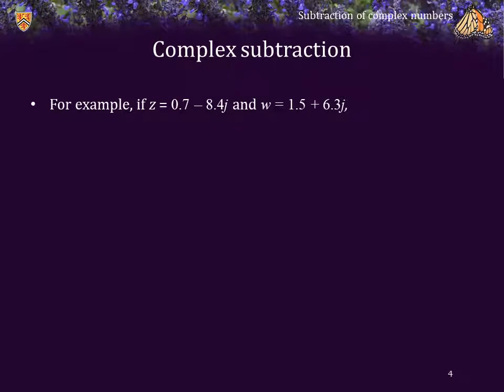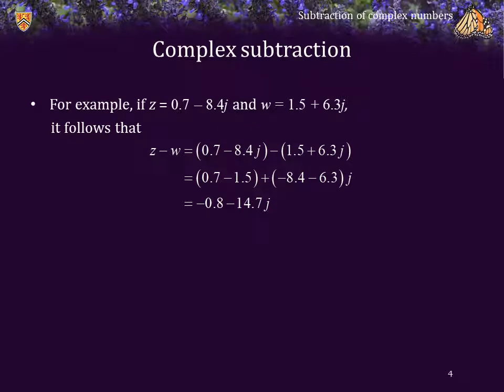For example, if z equals 0.7 minus 8.4j and w equals 1.5 plus 6.3j, we can calculate z minus w to be negative 0.8 minus 14.7j.